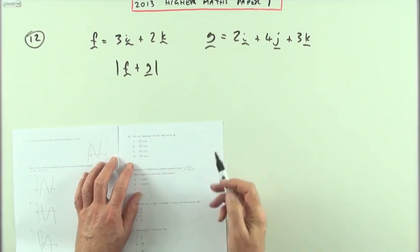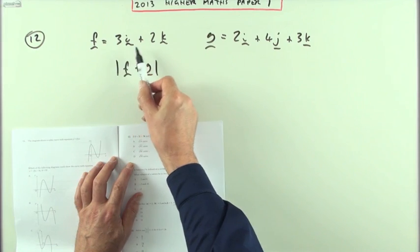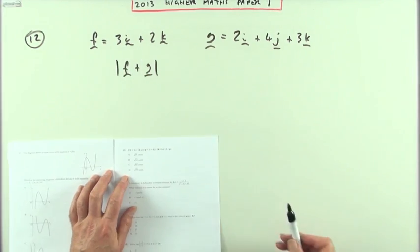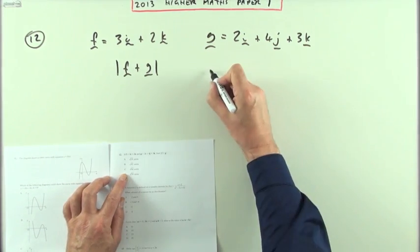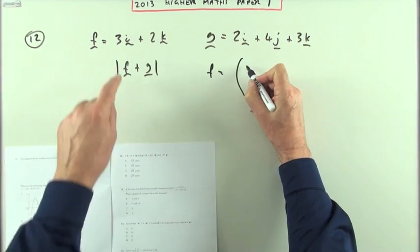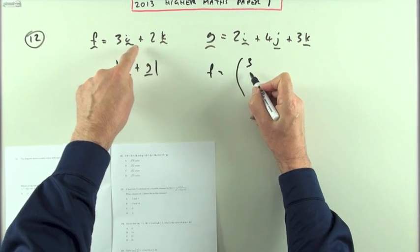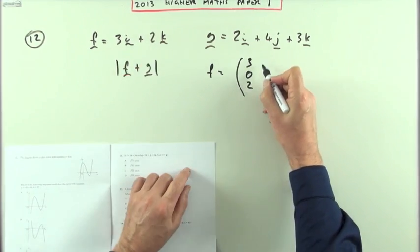Number twelve: you're given two vectors in the form of multiples of these unit vectors. You have to find the magnitude of the sum of these two vectors. First of all, I'd rather just write them as column vectors. Notice there's a j missing. I've got three for i, nothing for j, and two for k. And g, it's got all three components there: it's got two, four, and three.